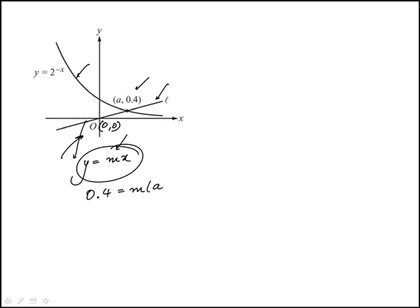We'll see if this helps. So the other thing is that we know this point falls on that curve, which means y is 0.4 when x is a. So actually we can find a from this and then plug that here to find what m is.